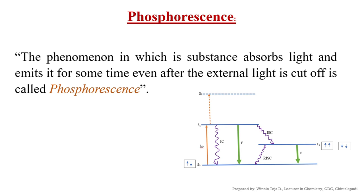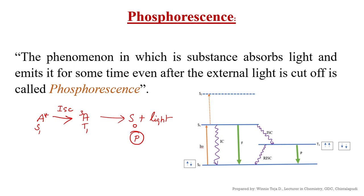Phosphorescence is the phenomenon in which a substance absorbs light and emits it for some time even after the external light is cut off. According to the Jablonski diagram, a molecule present in the singlet excited state, through inter-system crossing, becomes a triplet excited state molecule, and from the triplet excited state it returns to the ground state by releasing light. This process is called phosphorescence.